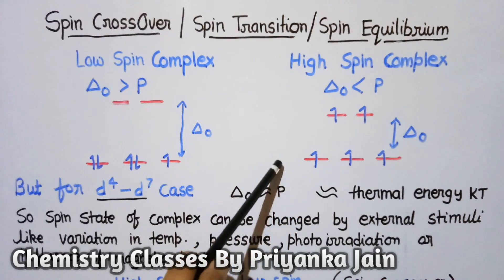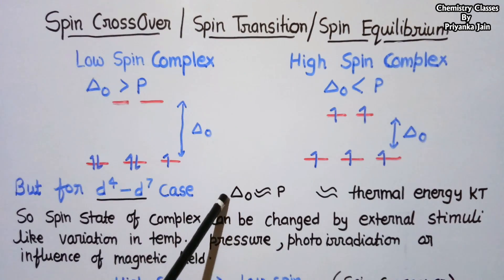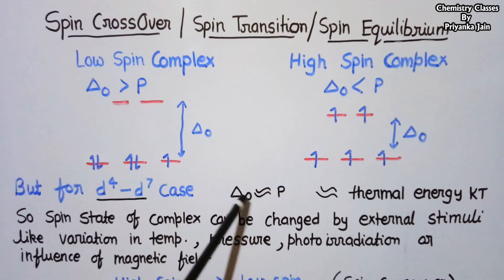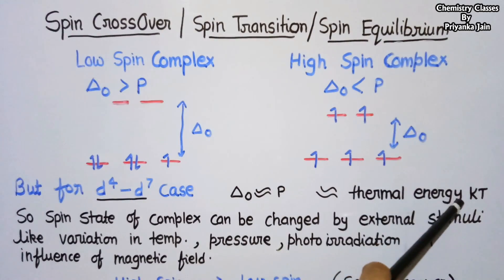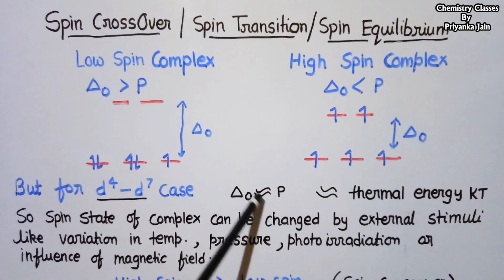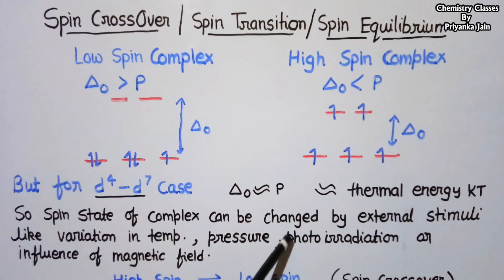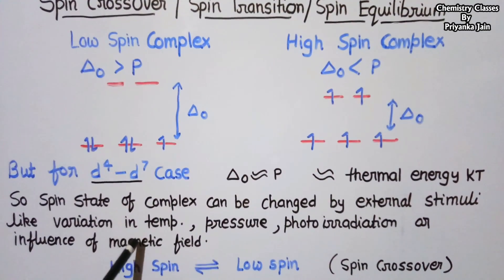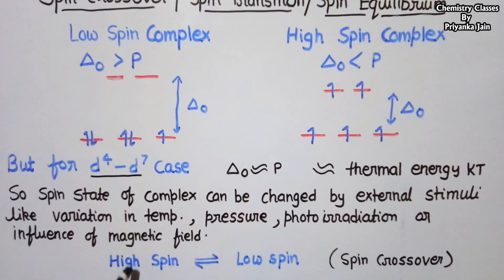In the case of d4 to d7 configurations, the values of Δo and P are nearly equal with very little gap between them. This gap can be easily bridged by thermal energy equal to kT. By providing temperature, pressure, photo irradiation, or a magnetic field, the spin state can be changed. Both high spin and low spin states can coexist at the same time — this is the spin crossover.